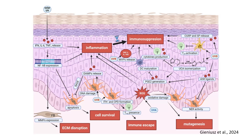This diagram demonstrates the complex effects of UV radiation on the skin, highlighting how solar UV contributes to inflammation, immunosuppression, DNA damage, and ultimately melanoma development. Solar UV radiation induces the release of pro-inflammatory cytokines such as IFN, IL-6, and TNF-α, triggering a cascade of inflammatory responses. These cytokines activate the NFKB pathway, as shown by the blue box, leading to further amplification of inflammation.